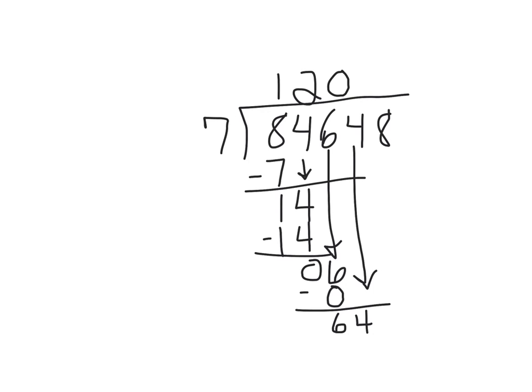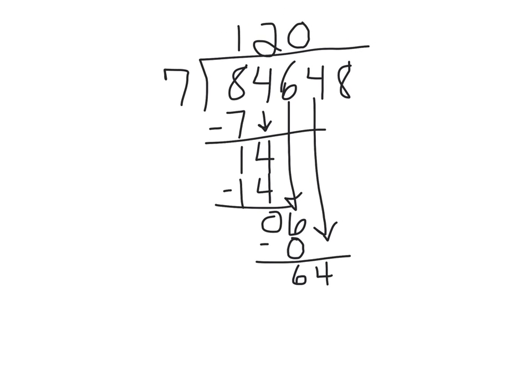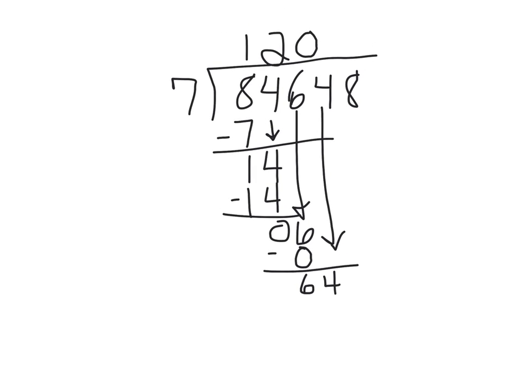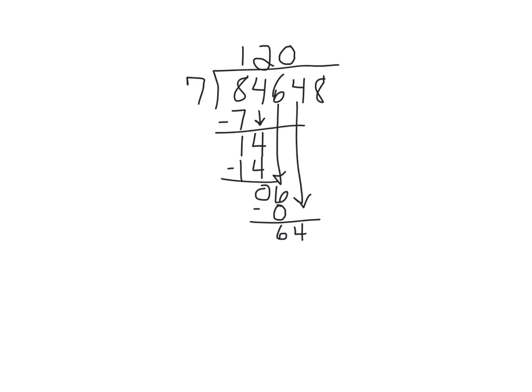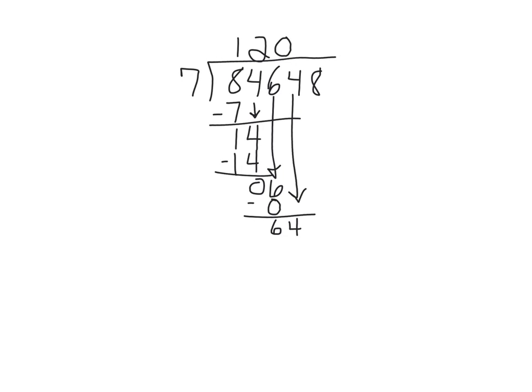So now how many times does 7 go into 64? Well, let me see if I can shrink this a little bit so we don't run out of room. So 7 times 7 is 49, 7 times 8 is 56, 7 times 9 is 63. So that's probably the closest we can get. We'll put 9 up here, 63.